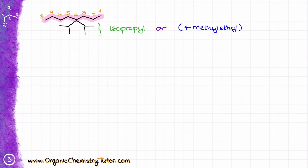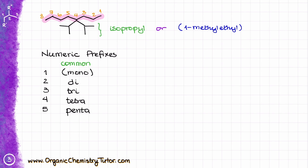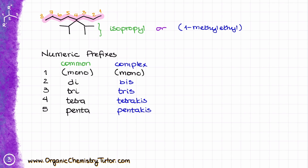Here's the thing: I have two of those groups at the fourth position, and that creates an interesting situation. If I'm using simple common retained names, I can use normal numeric prefixes like di, tri, tetra, penta, etc. However, if I'm using the complex names — with parentheses — I no longer use di, tri, tetra, penta. I use special names instead: for two, instead of di, we use bis; for three, instead of tri, we use tris; for four, it's tetrakis; for five, pentakis, and so on.